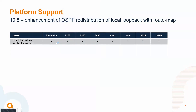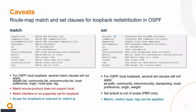This enhancement is platform-independent and available on every platform including the simulator. There are some caveats for match and set clauses. For OSPF local loopback, BGP attributes do not apply for matching — things like AS path and origin are not supported. Source protocol for local is not supported yet, and match interface for loopback is not supported as of now, so the scope for loopback match is only IP-based. For set clauses, several options used for BGP do not apply. The interesting set clauses for redistribution into OSPF would be metric, metric-type, and tag.